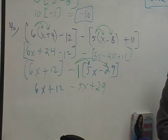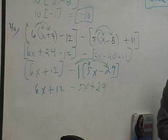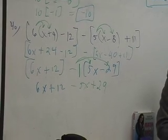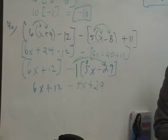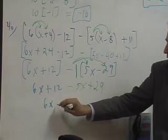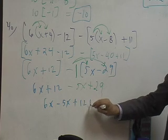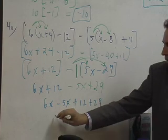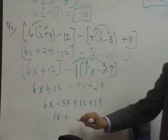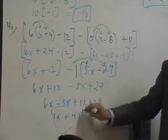6x plus 12 minus 5x plus 29. What do we do now, guys? Stuart. Take it home, Stuart. Come on, man. My guy can see the checkered flag, buddy. Last lap. Take it home. 6x minus 5x equals 1x, or plus 12, plus 29. Keep going. 1x plus 12, plus 29. 41. Yes, give a big hand.